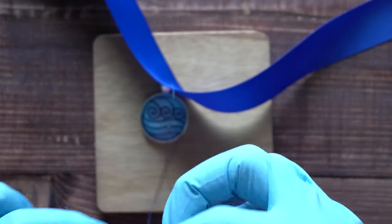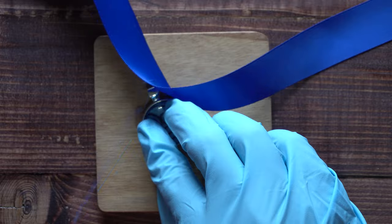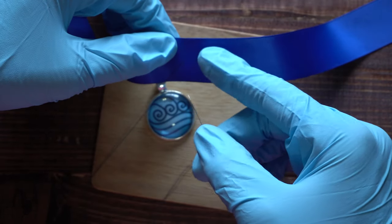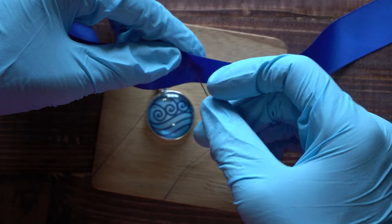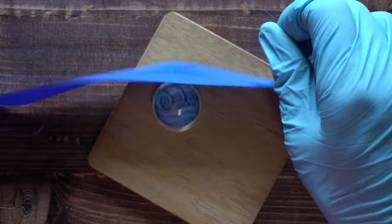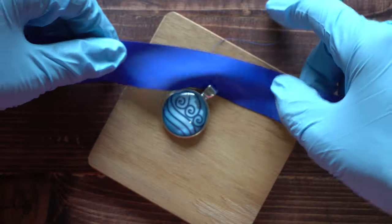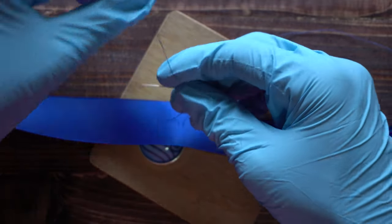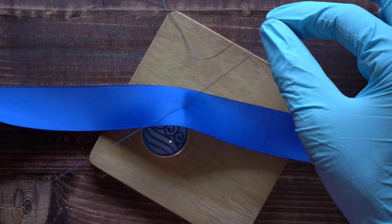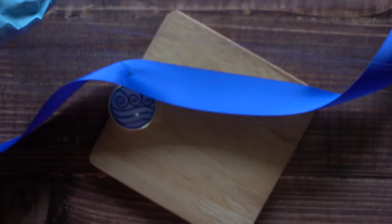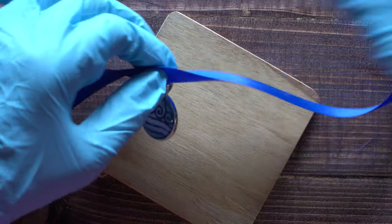Then take the thread through the ribbon and tie two to three knots on the backside. Make sure the knots you're tying are tight so the pendant isn't too loose. Repeat this process two to three times.